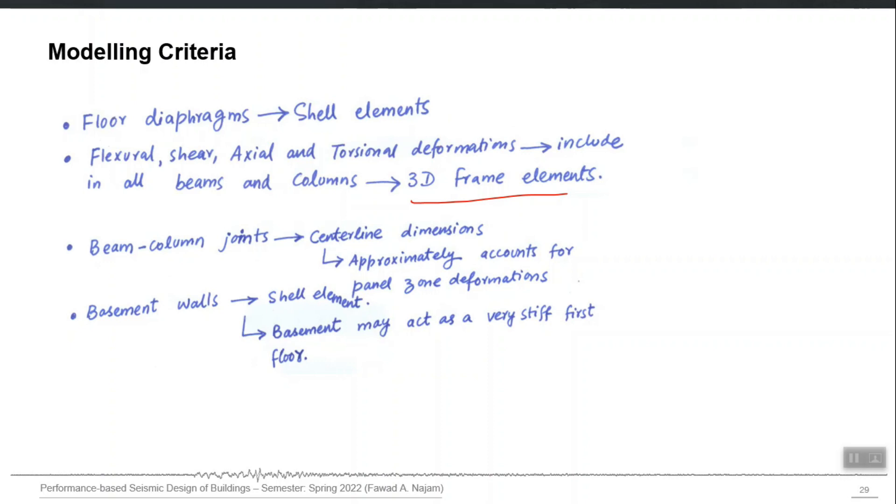If we already want to have a rigid diaphragm in which we kill all the in-plane degrees of freedom and we just use a kind of rigid link constraint with them, but again, if we use shell element, it may not affect significantly your analysis time.